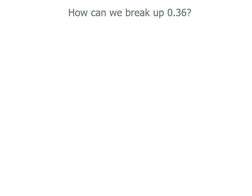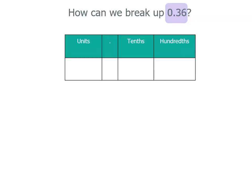If we want to break up 0.36, it helps to write our number in a place value table, so we know what that actually represents. It's 0 in the units place, then we've got a 3 to the right of the decimal point, and a 6 to the next place right in the hundredths place.